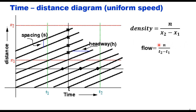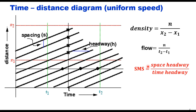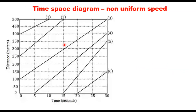Flow is the number of vehicles divided by time. At any location x on the road, if you count the number of vehicles between time t1 and t2, there are three vehicles, so n=3, and flow equals 3 divided by (t2−t1). Space mean speed is the space headway divided by time headway, which is the slope of the trajectory line. Since all vehicles are moving at the same speed, the slopes are the same.